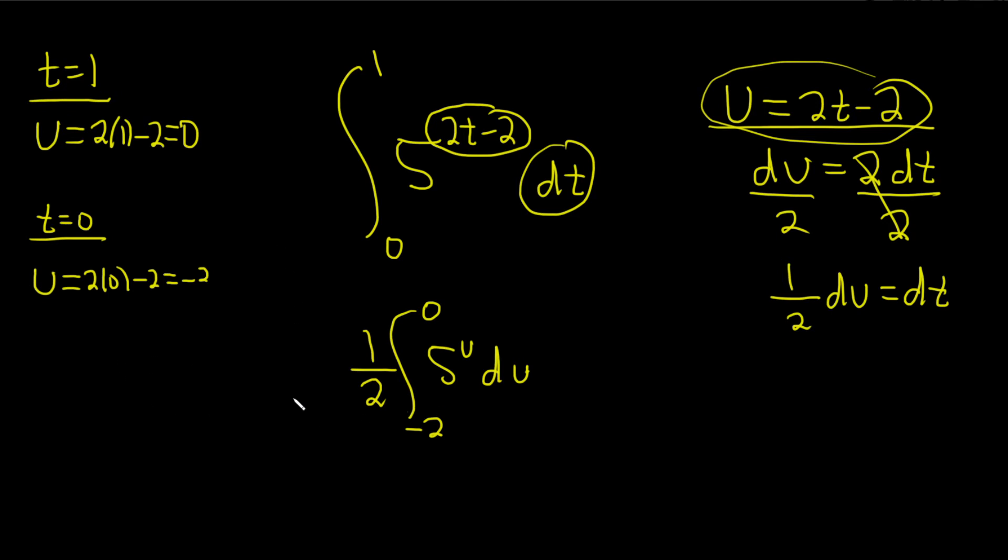So now we're going to integrate this. And to do that, we're going to use this formula. If you have the integral of a to the x with respect to x, this is actually just a to the x divided by the natural log of a plus our constant c.